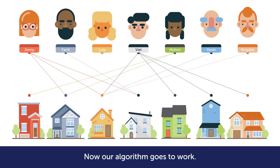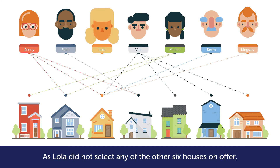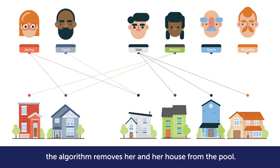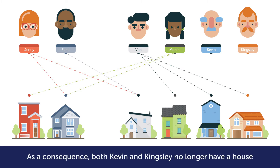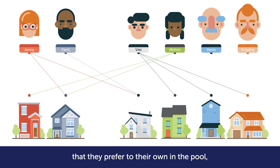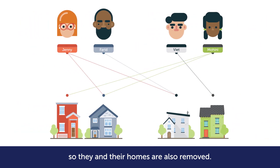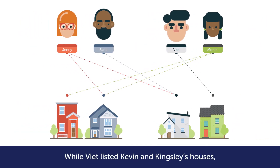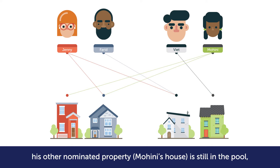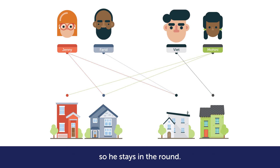Now our algorithm goes to work. As Lola did not select any of the other six houses on offer, the algorithm removes her and her house from the pool. As a consequence, both Kevin and Kingsley no longer have a house that they prefer to their own in the pool, so they and their homes are also removed. While Viet listed Kevin and Kingsley's houses, his other nominated property — Mahini's house — is still in the pool, so he stays in the round.